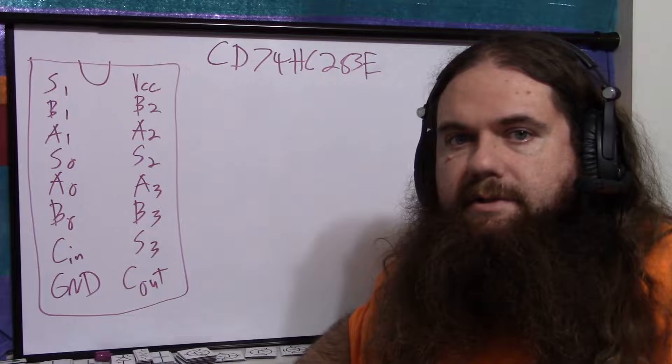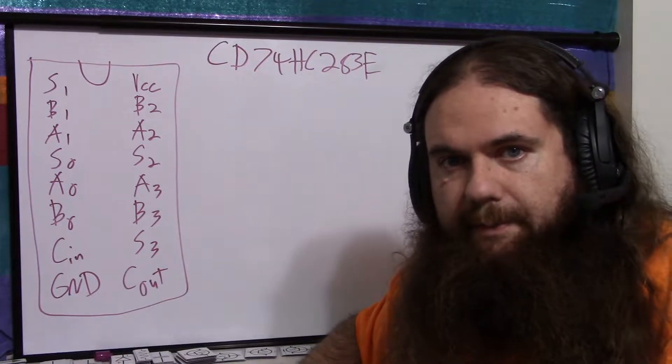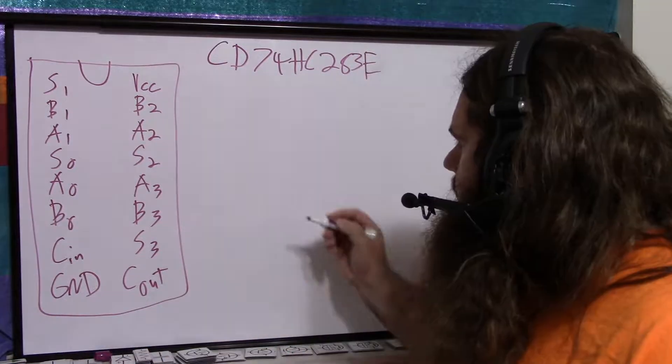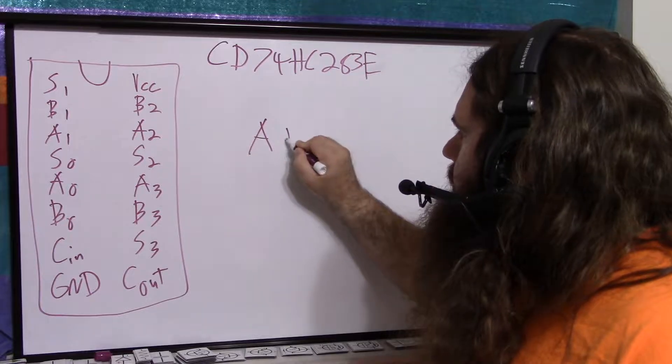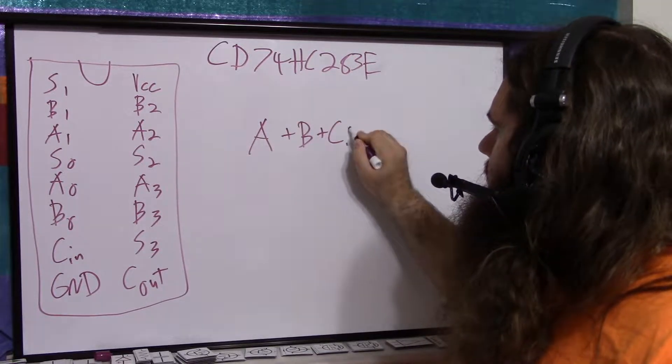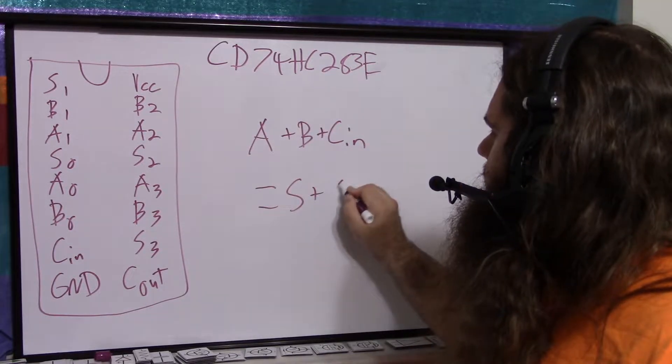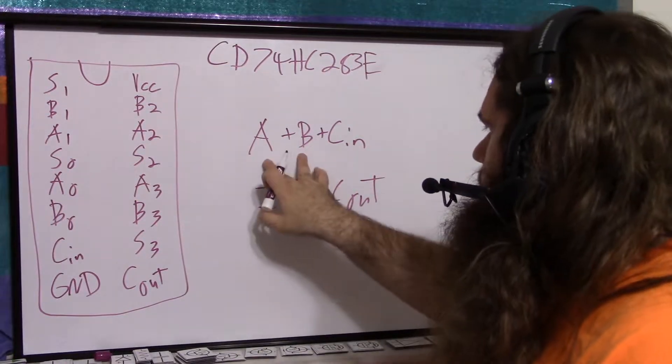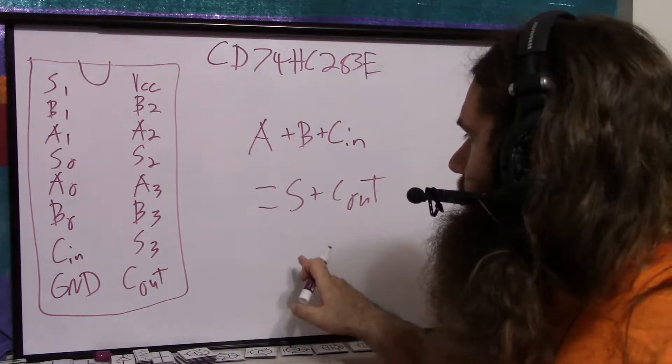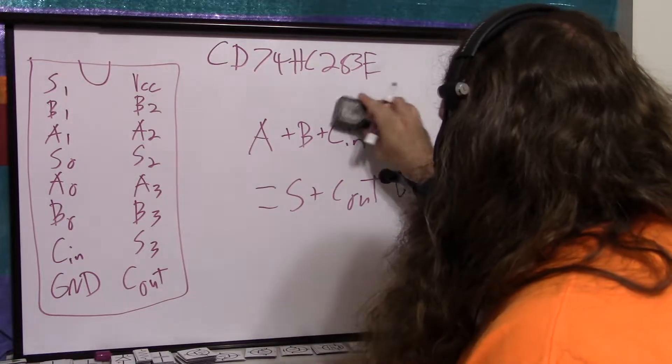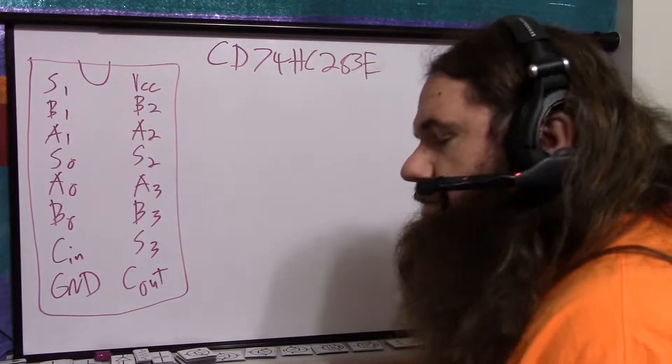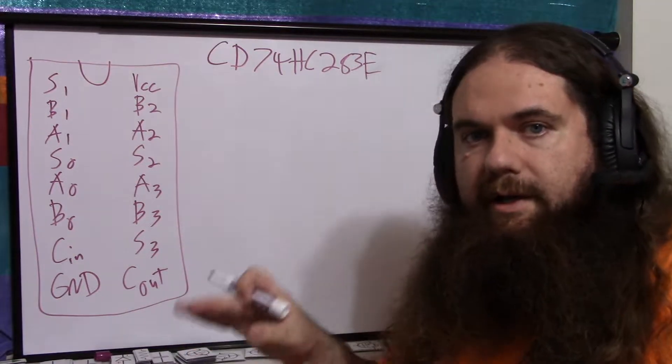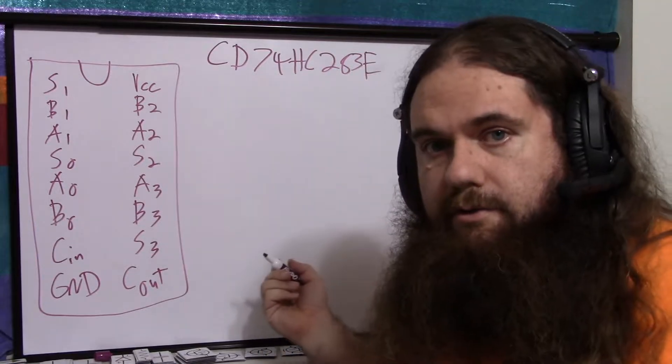And the reason for that is it has something called fast ripple carry. Basically, let's say you're adding A plus B plus C in equals S plus C out is the basic operation you're doing. You add two numbers plus whatever carry in, and you get a result and a carry out. So because it's just a logic chip, there's no state, there's no memory, it's just combinational, you just use a truth table.